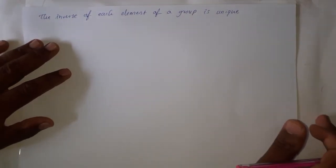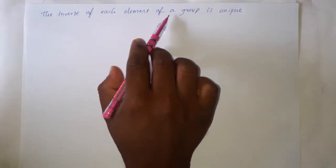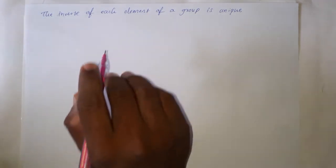Hello dear students, welcome to mathematics class. In this class let us discuss some more theorems on group theory. So here is the first theorem of today's class: the inverse of each element of a group is unique. This means that if any group is given, then the inverse of each and every element of that group is unique — there is no other inverse element except the unique one.